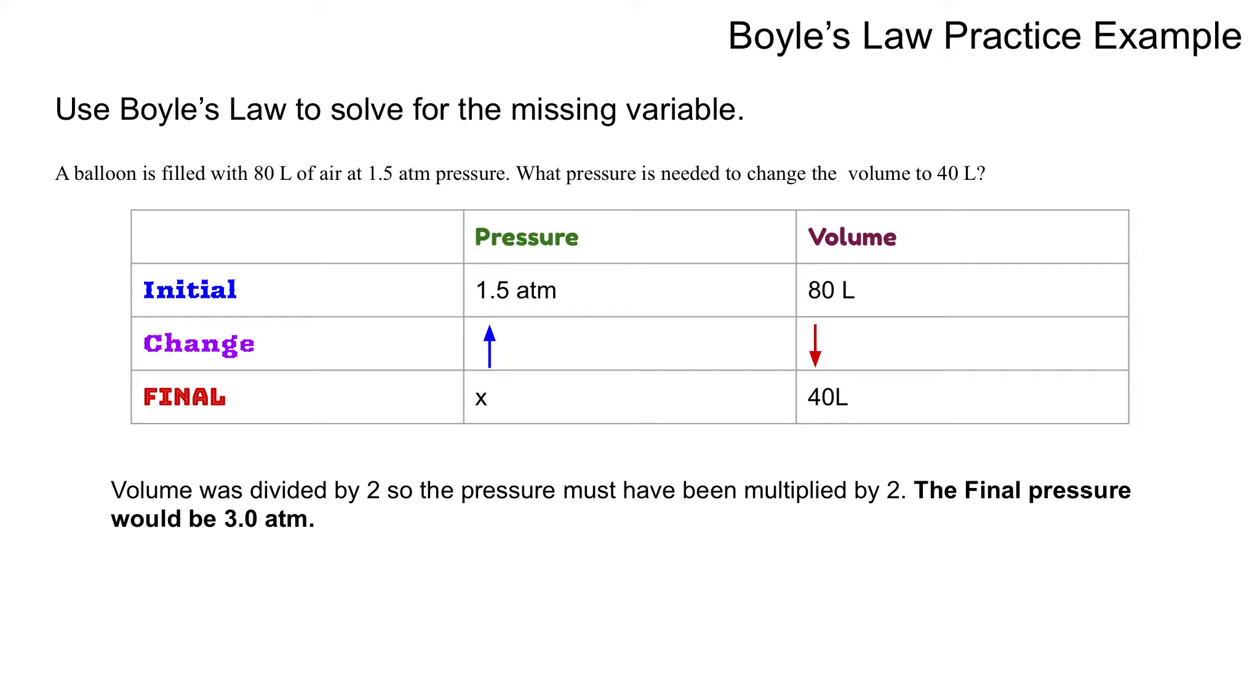What's really handy is drawing out a table, an initial change and final. Sometimes they're called ICE tables or BCA, before, change, after tables. They're really helpful in the next several units of being able to keep track of all of the numbers that you are getting. So, my initial pressure was 1.5 ATM. My initial volume was 80 liters.